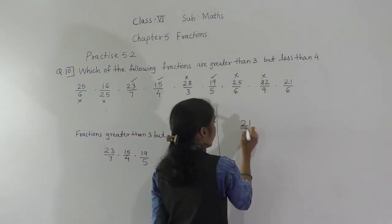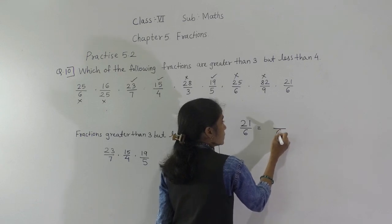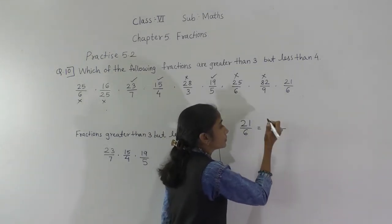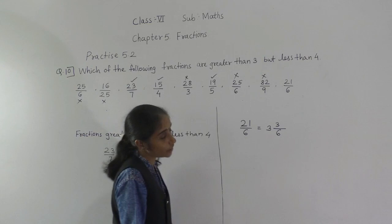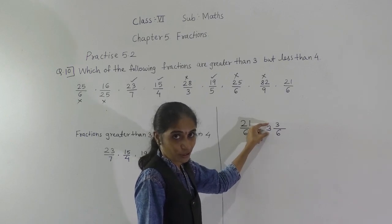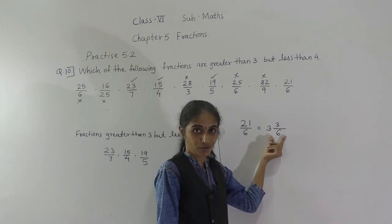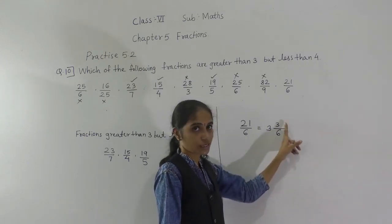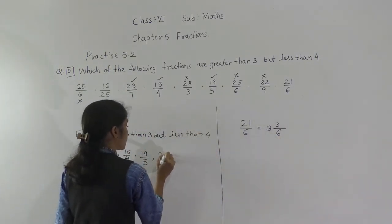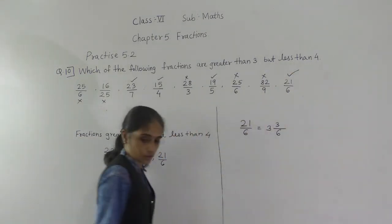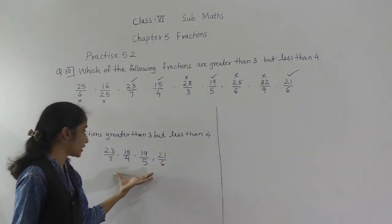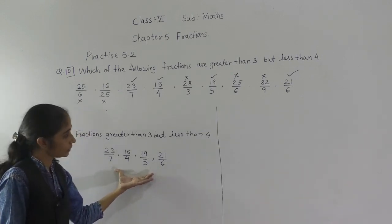Next: 21 upon 6. Convert: 6 threes are 18, remainder 3, giving 3 and 3 upon 6. The whole number part is 3, so this number comes between 3 and 4. So 21 upon 6 is also one of our answers. The fractions greater than 3 but less than 4 are: 23 upon 7, 15 upon 4, 19 upon 5, and 21 upon 6.